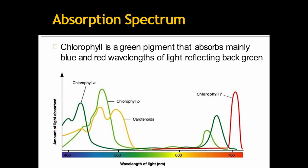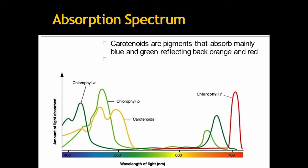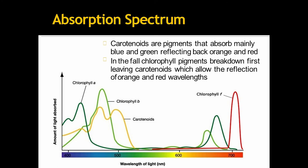Likewise, in case of chlorophyll B, it also absorbs mainly blue and red color but reflects back the light green color. Carotenoids are pigments that absorb mainly blue and green but reflect back the orange and red. In the fall season, chlorophyll pigments break down first, leaving carotenoids which allow the reflection of orange and red wavelengths. That is why during fall, all the leaves become red or yellow or orange-ish in color.